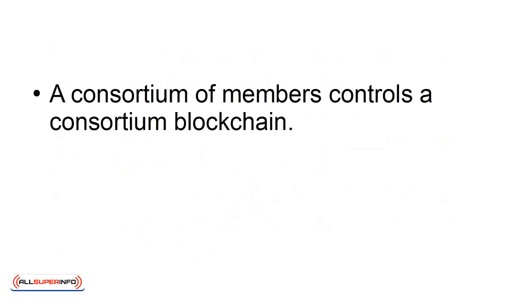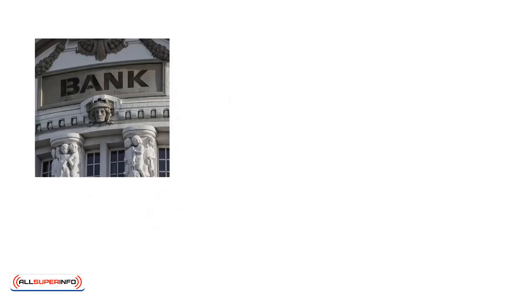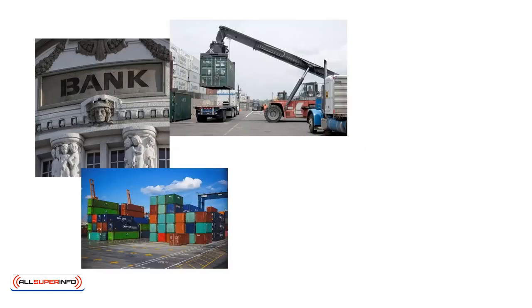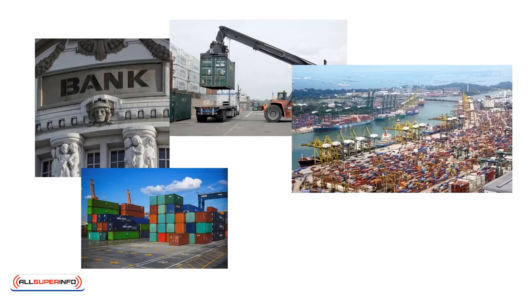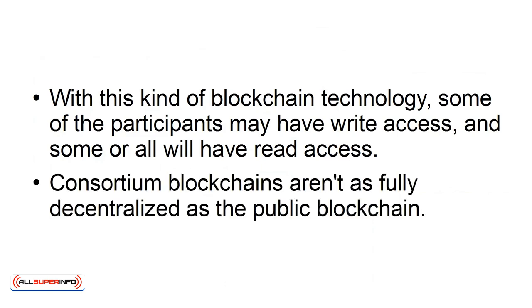Consortium blockchain. A consortium of members controls a consortium blockchain. Because of this, it has a predefined set of nodes for users with access to writing the data or block. Members of a consortium blockchain may be participating banks, exporters, importers, ports of sending and receiving countries, customs officials, etc. With this kind of blockchain technology, some participants may have write access and some, or all, will have read access. Consortium blockchains aren't as fully decentralized as the public blockchain.